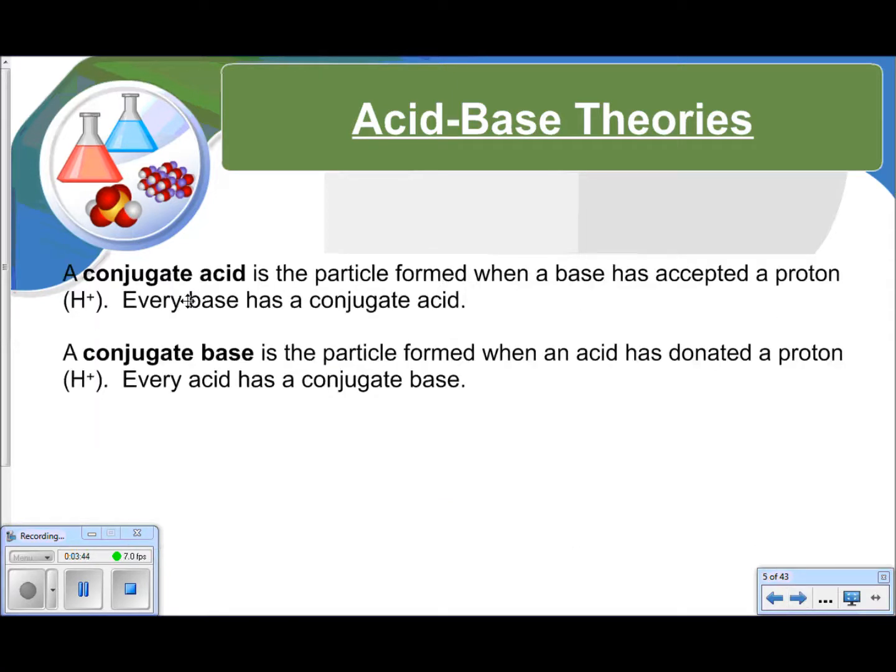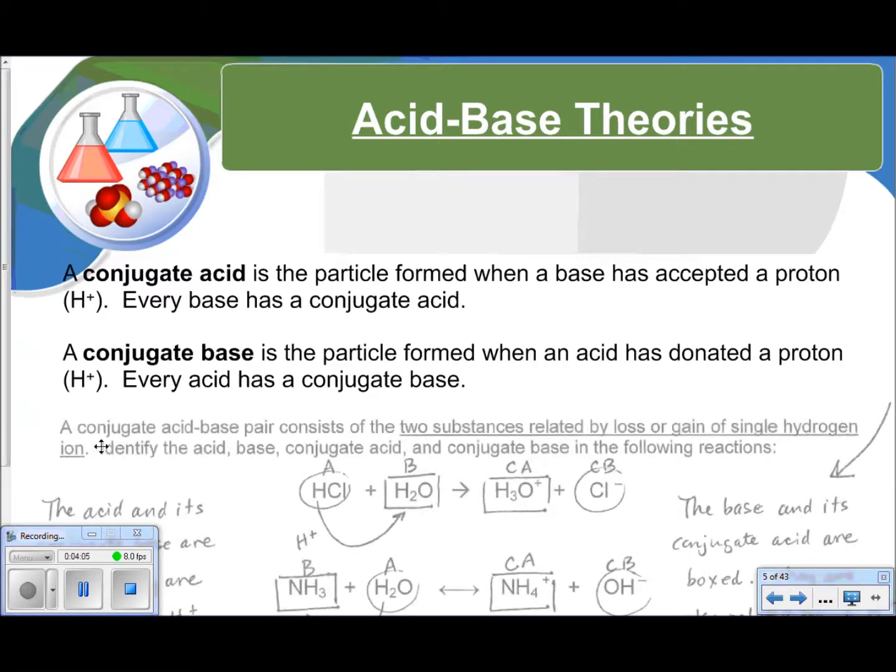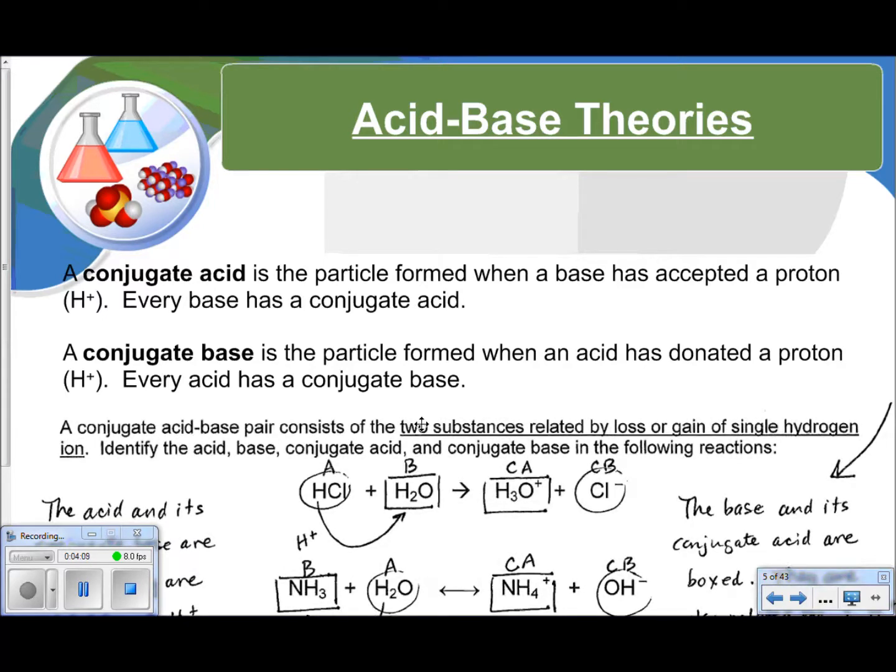A conjugate acid is the particle formed when a base has accepted a proton. Every base has a conjugate acid. A conjugate base is the particle formed when an acid has donated a proton. Every acid has a conjugate base. A conjugate acid-base pair consists of the two substances related by loss or gain of single hydrogen ion. Identify the acid, base, conjugate acid, conjugate base in the following reaction. So let's do this together.